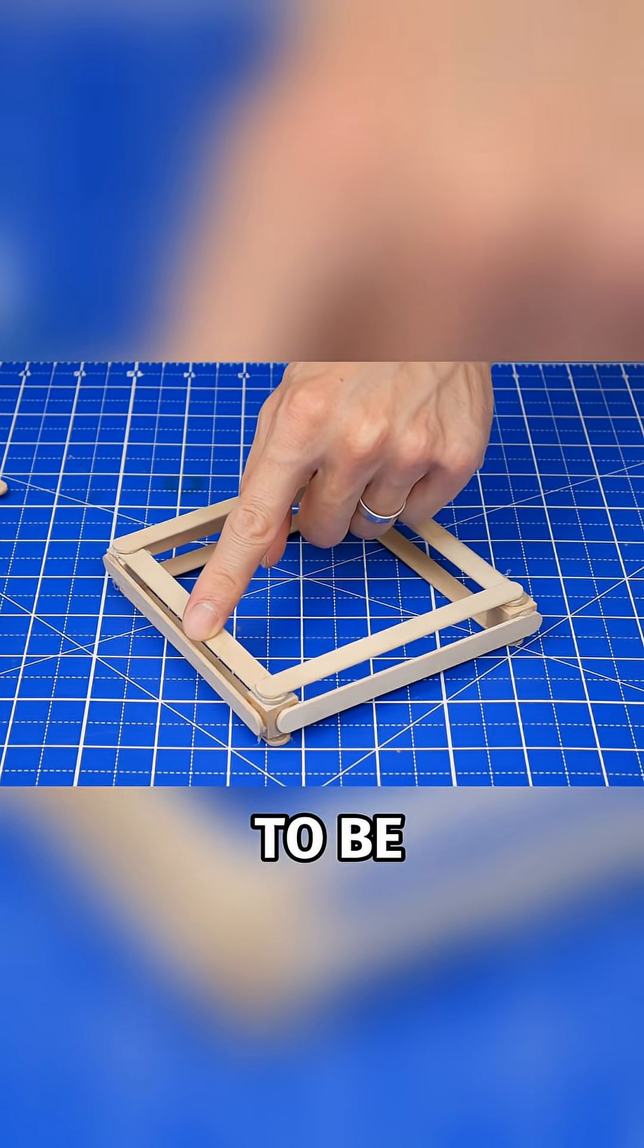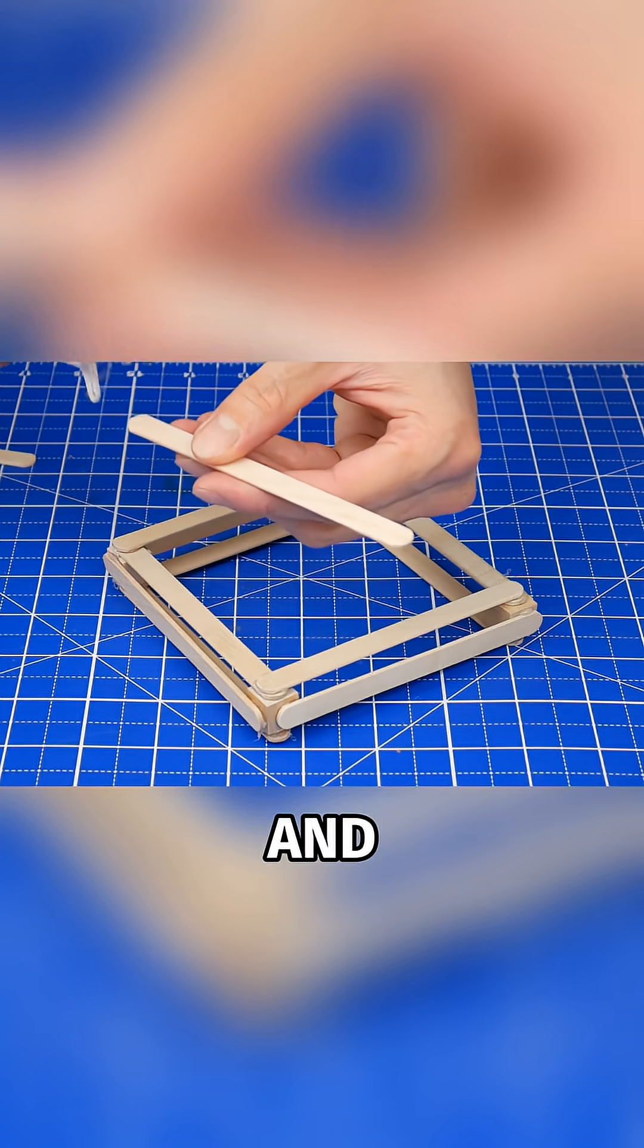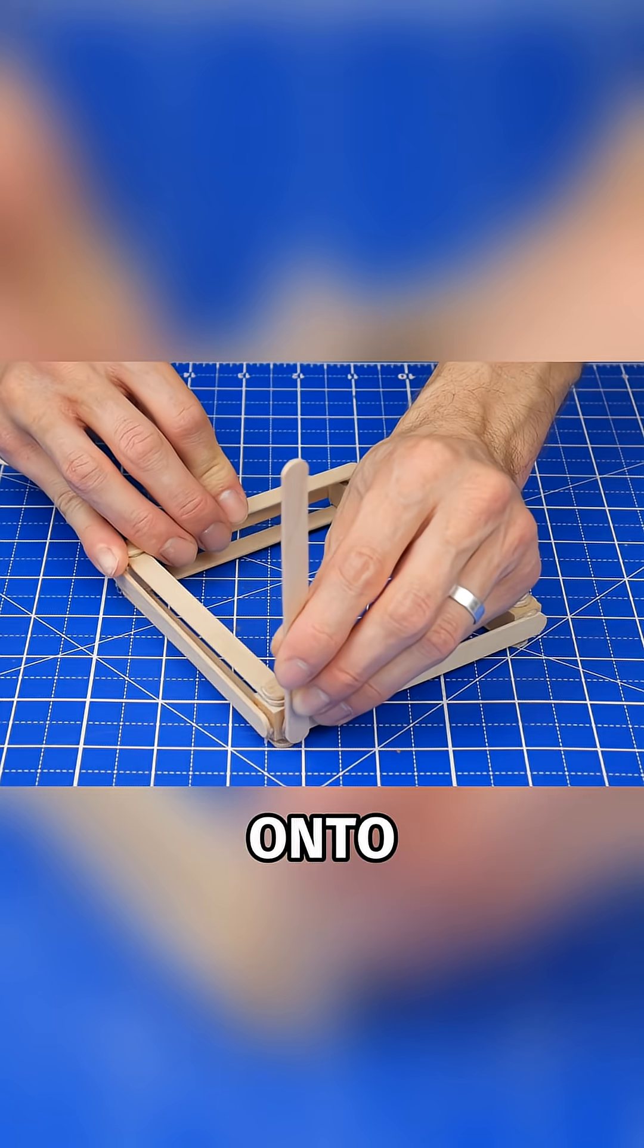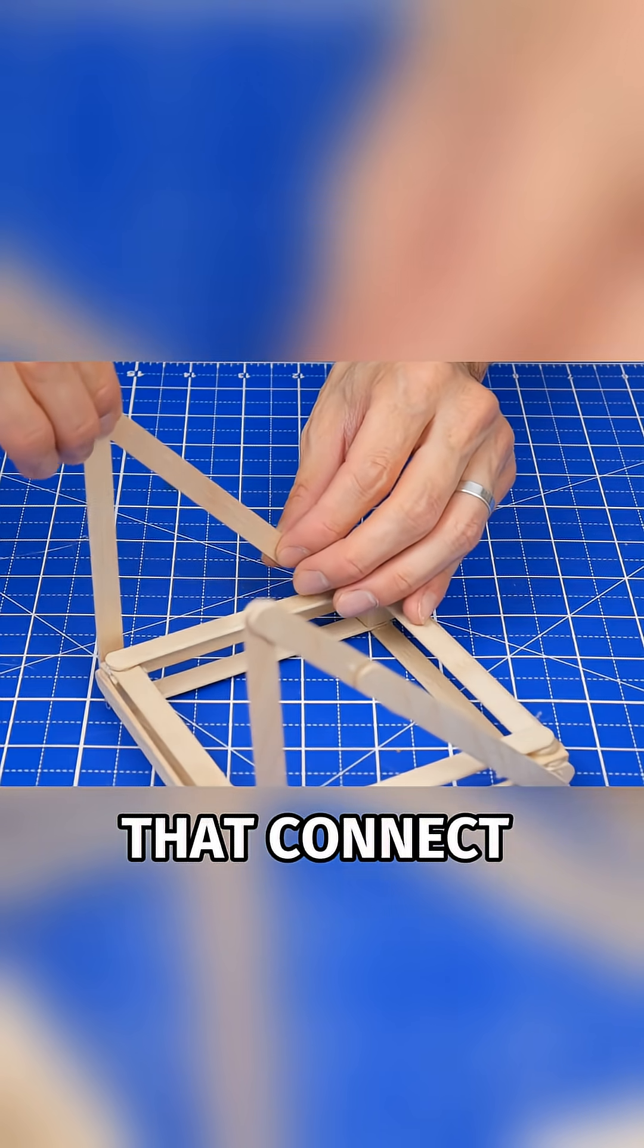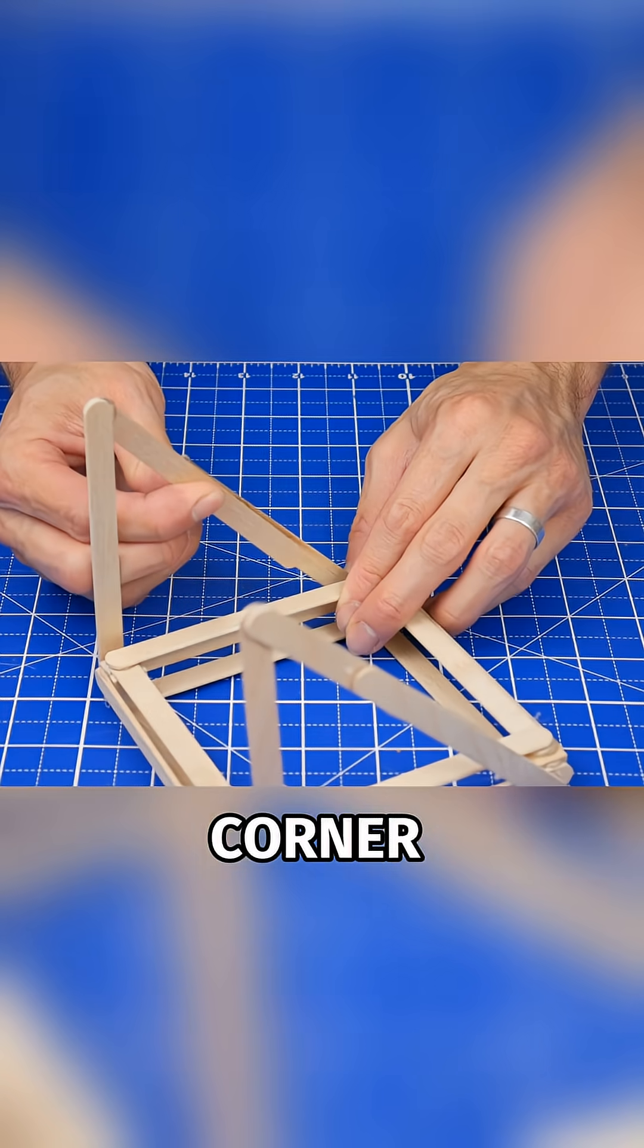Next, choose one side to be the front of the slingshot and glue a stick upright onto each side. Then from there, glue two more sticks that connect the top of this one to the bottom corner of the base.